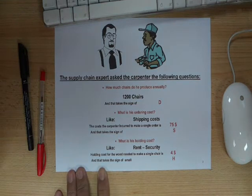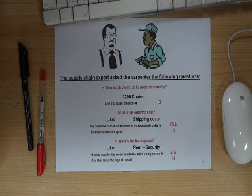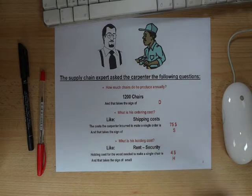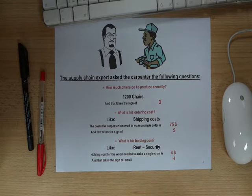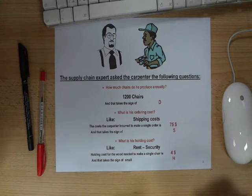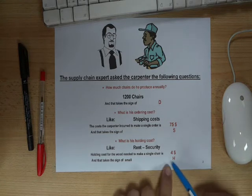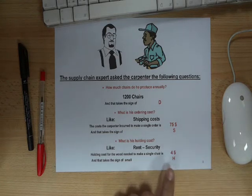The holding cost is all the costs the carpenter incurs for holding wood in inventory — like rent, security, and many other things. The expert and the carpenter calculated the costs together and agreed that the holding cost for the wood needed to make a single chair is $4, and that takes the sign H.